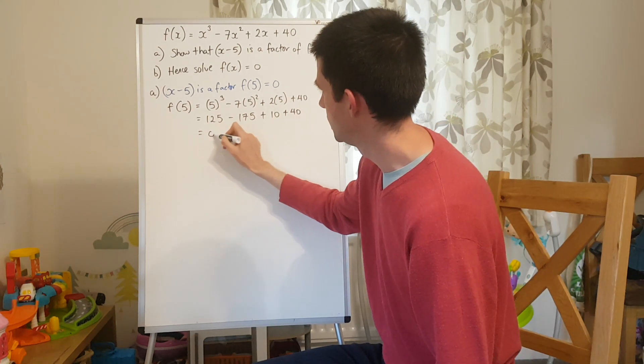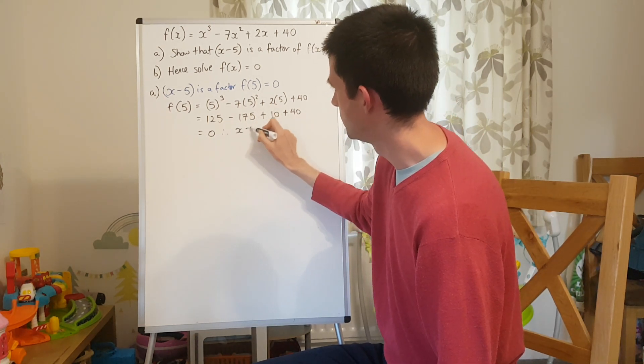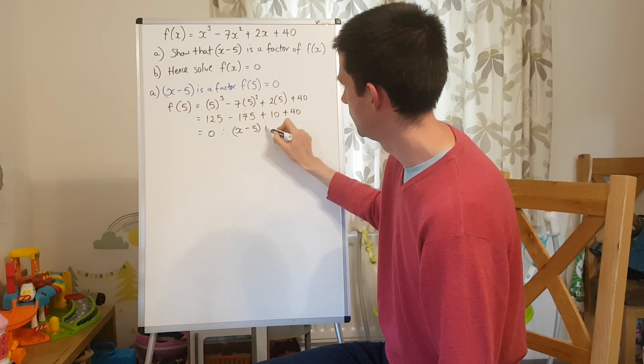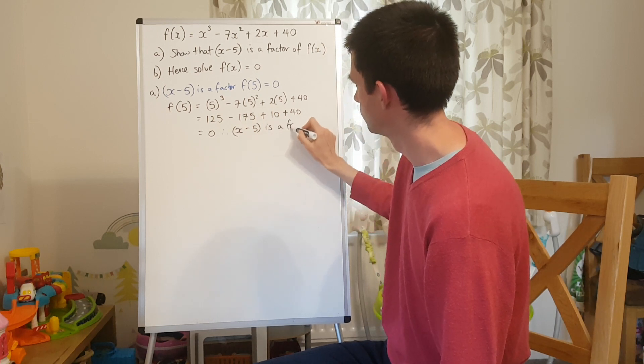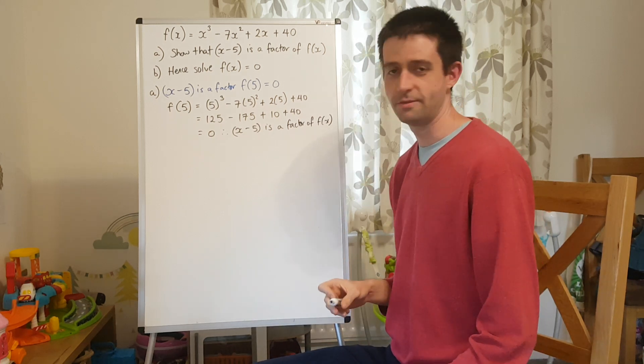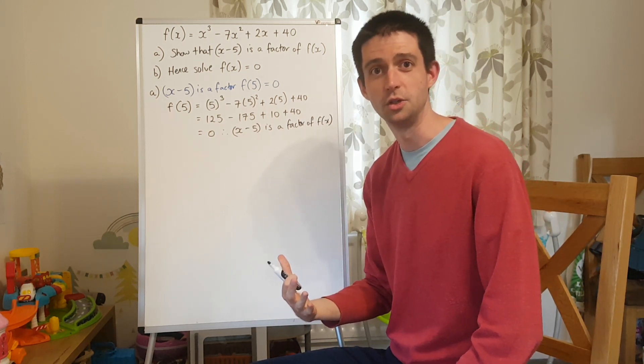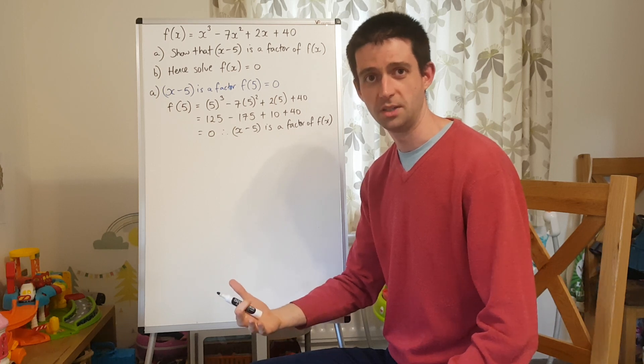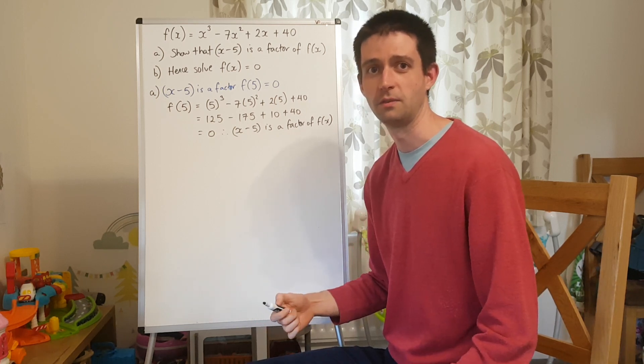Therefore, I know that x minus 5 is a factor of f of x. I must write that written conclusion. That's what I've demonstrated. x minus 5 is a factor of f of x.